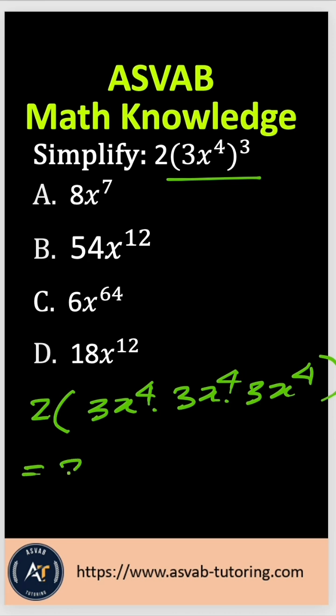So that gives you 2 times 3 times 3 is 9, 9 times 3 is 27, x to the 12th power, right?